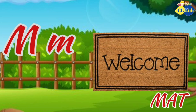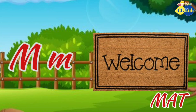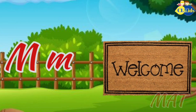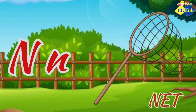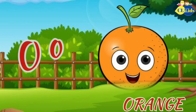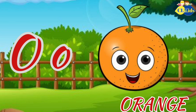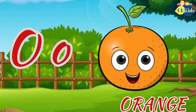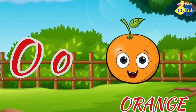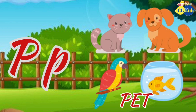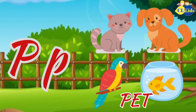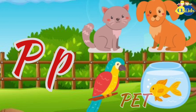M is for mat, m-m-mat. N is for net, n-n-net. O is for orange, o-o-orange. P is for pet, p-p-pet.